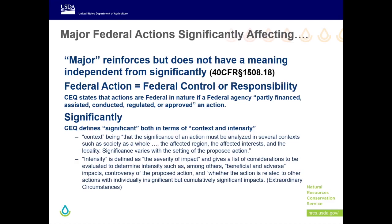So how do we determine significance? We look at the context and the intensity. Context is important because we must determine how widespread the effects of the action are. For example, do the actions evaluated in a conservation plan affect only the farm, or the community, or are they more widespread? Intensity is the severity of impact. The considerations for intensity are the extraordinary circumstances, which we will discuss later.